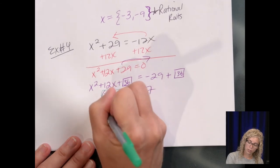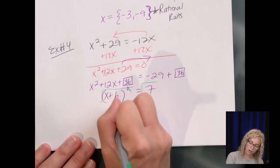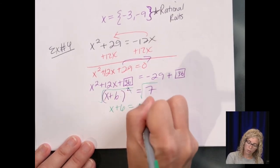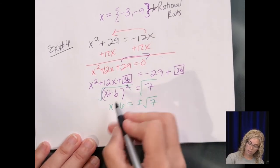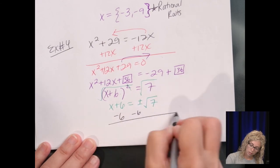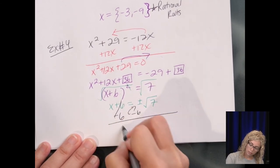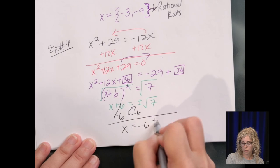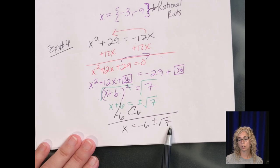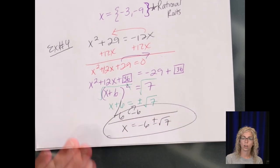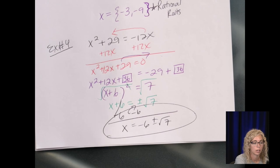Then take the square root of both sides. Undo the square. x plus 6 equals plus or minus radical 7. Subtract 6. Slide it up front. And can we reduce the square root of 7? No. 7 only has two factors. It's prime. One and itself. There's our answer.